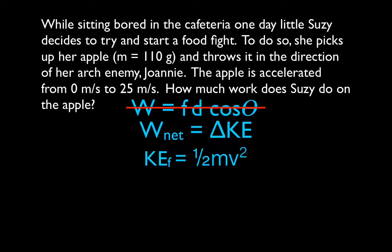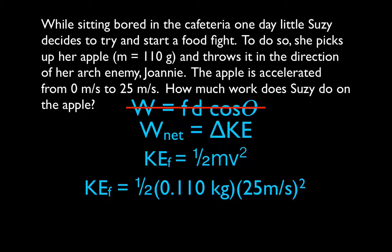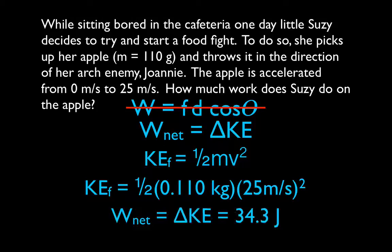So if we calculate the final kinetic energy, which is one-half m, 0.110 kilograms, you have to convert the grams to kilograms, times the velocity squared. So we're going to square the 25, and we only square the 25. And we get that when she lets go of the apple, the kinetic energy of the apple is 34.3 joules.